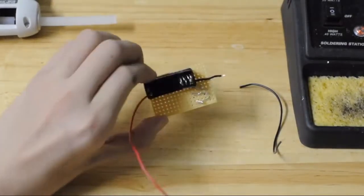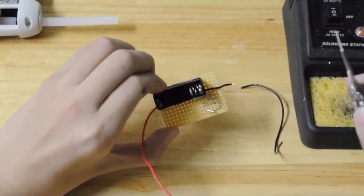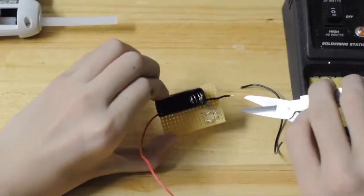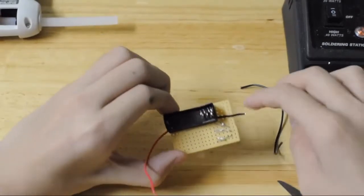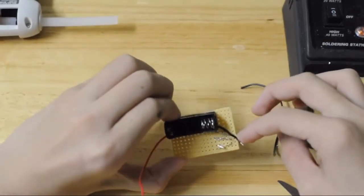After your battery holder is hot glued onto the top left of the perfboard, what you're going to need to do is use a pair of scissors and cut the wire so that it reaches the last leg of the transistor without sticking out.